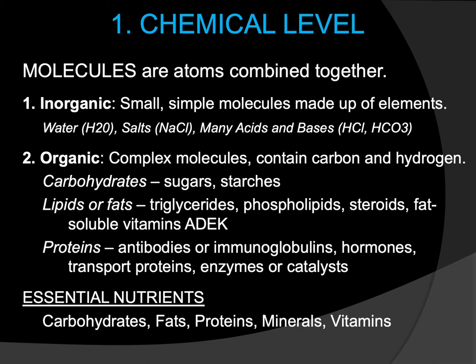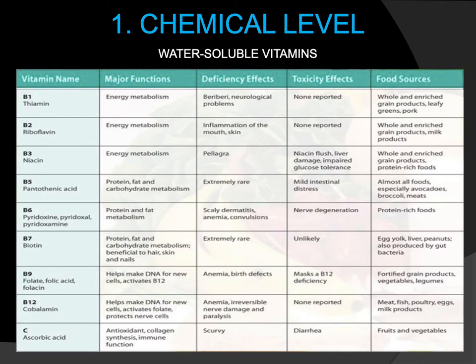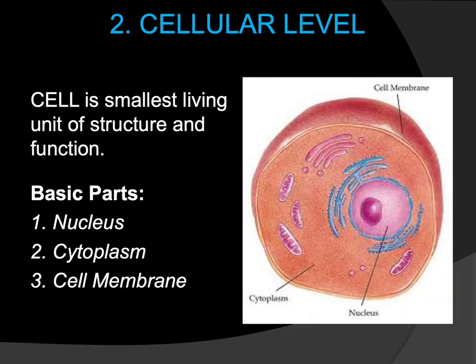Next are the vitamins. The fat-soluble vitamins are A, D, E, and K. Take note of their specific functions, what happens if they are deficient in the body, and what foods are rich in these vitamins. The other group are the water-soluble vitamins, basically the vitamin B complex and vitamin C (ascorbic acid). Again, take note of the vitamin name, major functions, deficiency symptoms, and food sources. Now let's move on to the second level of organization — the cellular level.